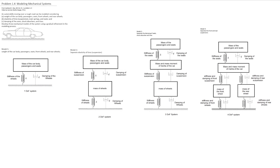We can complicate our system even further when we consider the mass of the passengers and the seat, the mass and the mass moment of inertia of the car, and then separate the mass of the front wheel and the mass of the rear wheel. Here we have the stiffness and the damping of the front suspension and the rear suspension, and the stiffness and damping of the front wheels and the rear wheels. This will be a four-degree-of-freedom system.